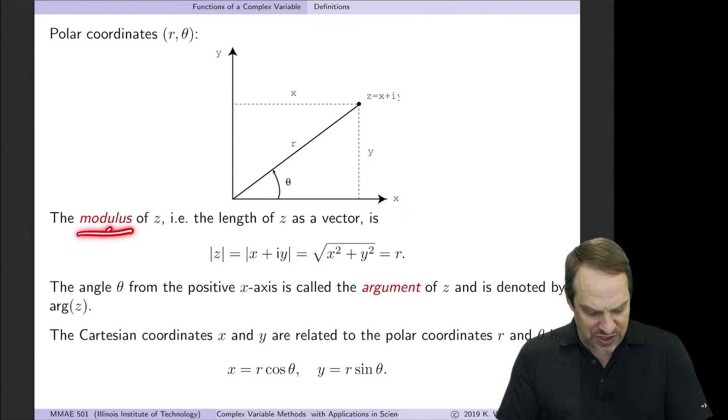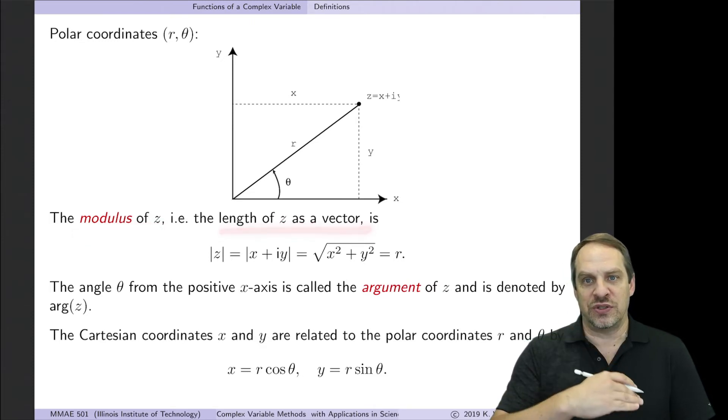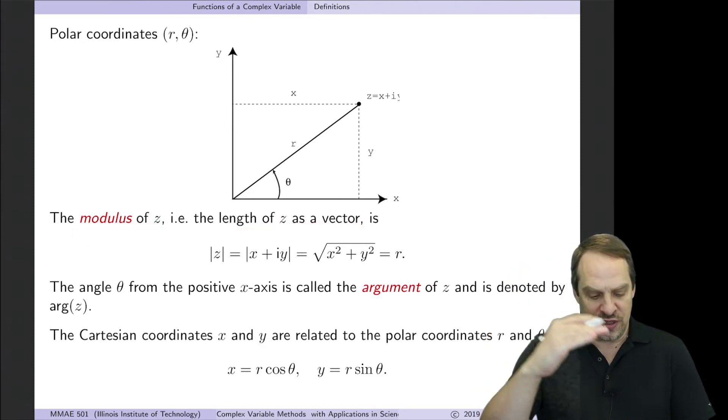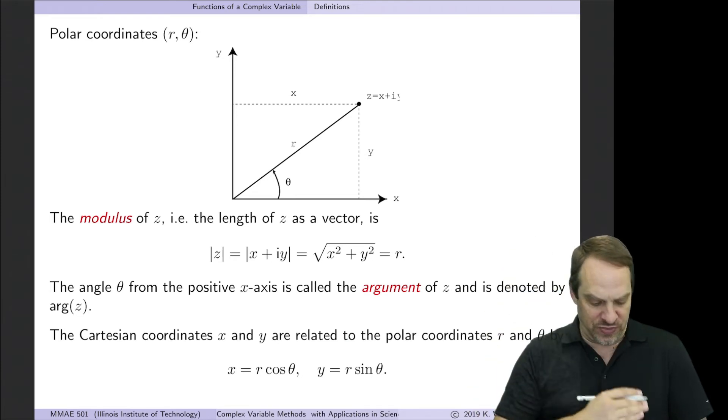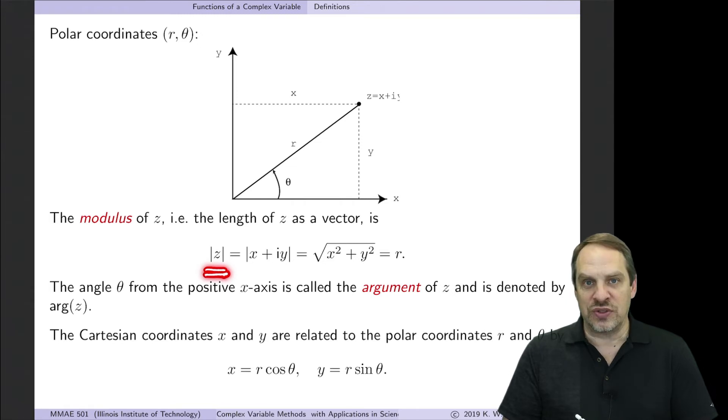Now the modulus of Z is just the length of Z as a vector. So it's the distance from the origin to the point Z. So it's that distance R that is the modulus. We denote it using this notation. It's the same notation as the absolute value because, in fact, the absolute value of a real number is just a special case of the modulus of a complex number. So it's the square root of the sum of the squares of X and Y because that gives us the distance. And that's equal to R, the radial distance from the origin.